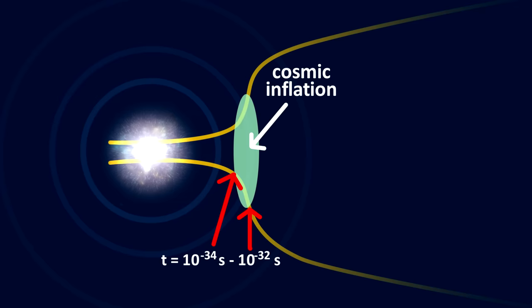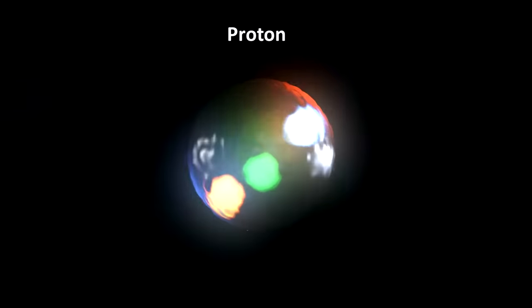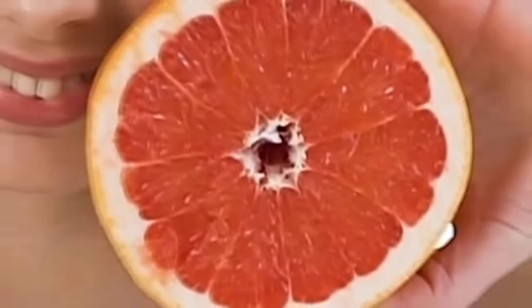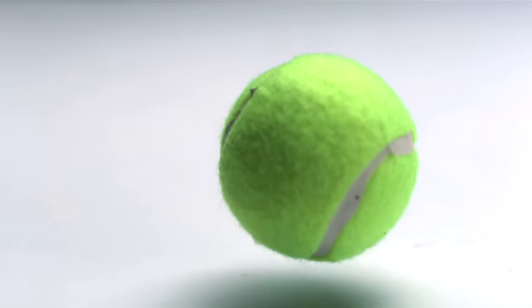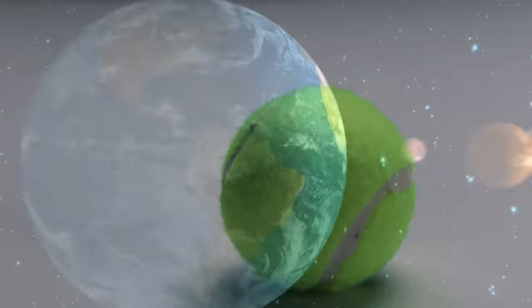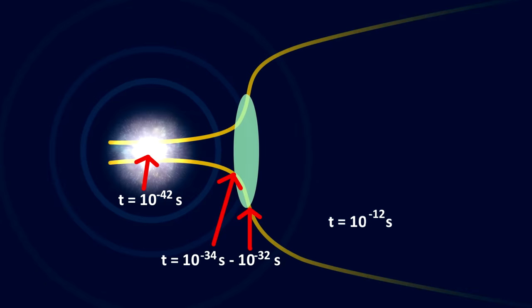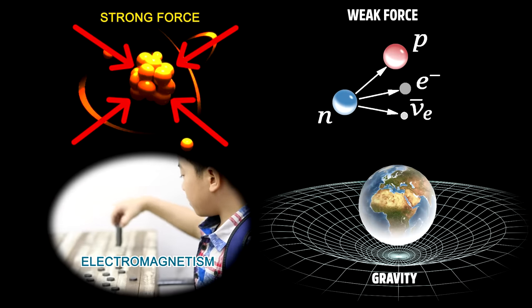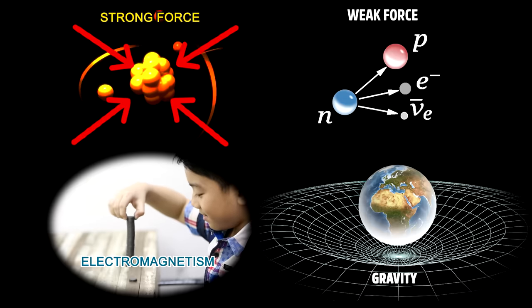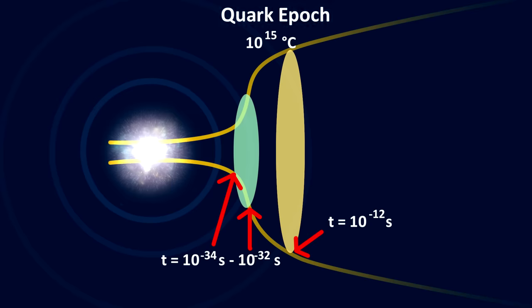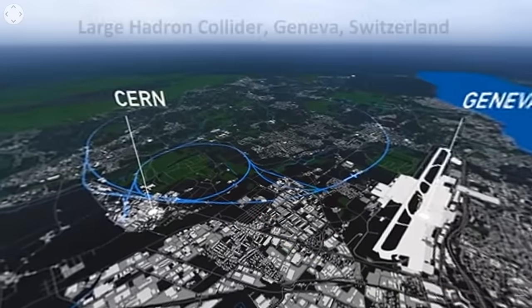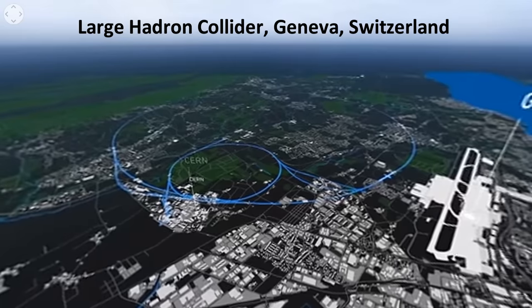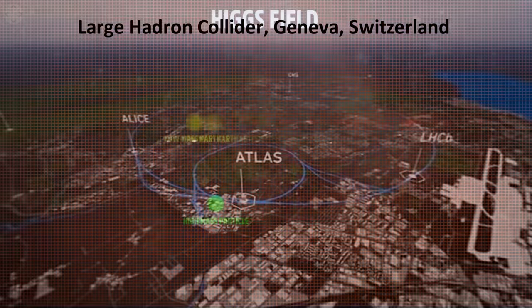The separation of the strong force is thought to have powered something called cosmic inflation — the momentary expansion of the universe, which went from something tinier than the size of a proton to the size of a grapefruit. This is analogous to something as small as a tennis ball becoming the size of the solar system in a very small instant. At 10 to the negative 12 seconds, called the quark epoch, the electroweak force split into the weak force and electromagnetism. So at this point, all four forces became distinct. The temperature of the universe cooled to 10 to the 15 degrees Celsius, and energies are about 100 giga electron volts. We know a lot about the universe up to this era because such energy levels can be easily modeled in particle accelerators such as the Large Hadron Collider, so our understanding of the electroweak force is fairly robust.